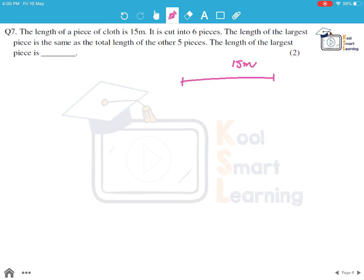So if we have this cloth which is 15 meter and it is cut into 6 pieces, where this one piece, the largest, is equal to the other 5 pieces. So this 5 pieces add up to this largest piece. So this obviously means the length of the largest piece is half of the total length, which would mean 15 by 2, which is 7.5 meter.